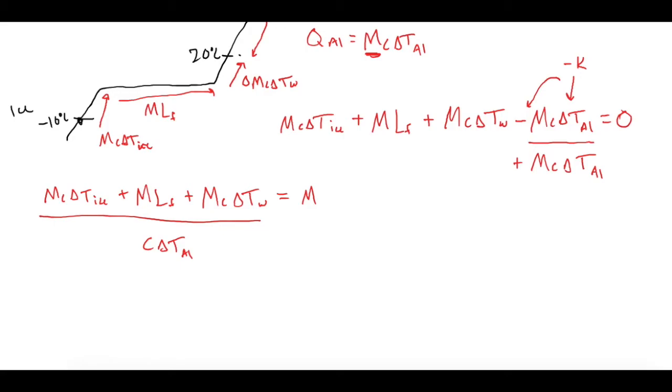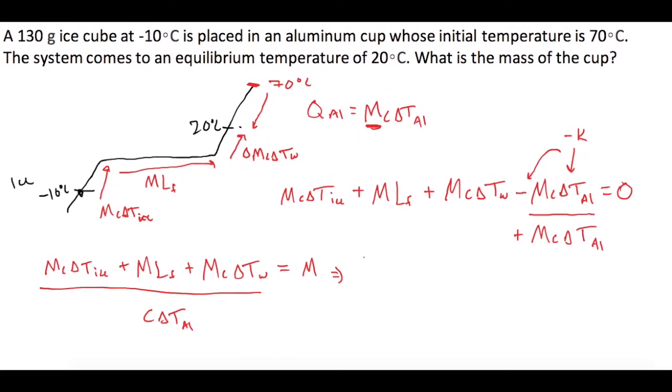So now we can plug in our values. When we do this, we get the mass of the water, they tell us is 130 grams, so 0.13 kilograms. And we're going to multiply that by C of ice, which is 2090, times the change of temperature of the ice, which in this case is 10 kelvin, going from -10 up to zero. So now we're going to add the mass of the ice, 0.13 times the latent heat of fusion of water, which is 3.33 × 10^5.